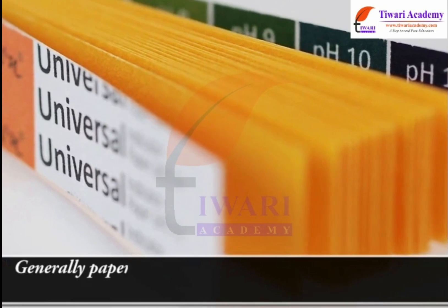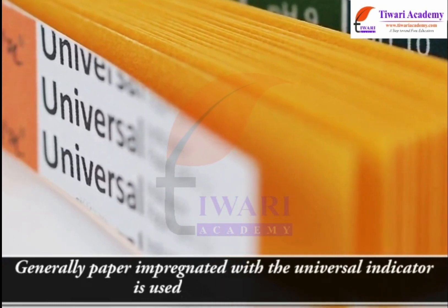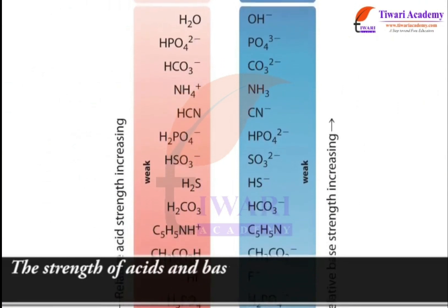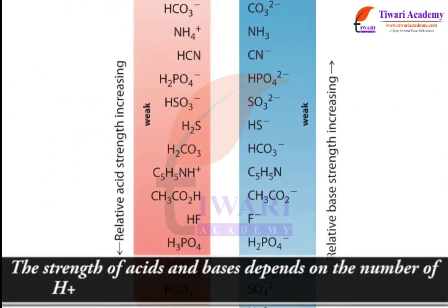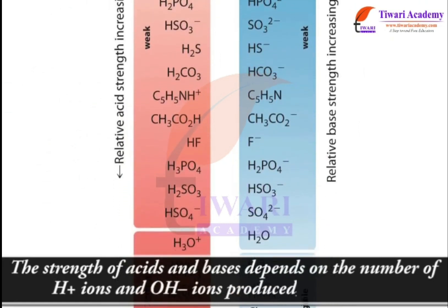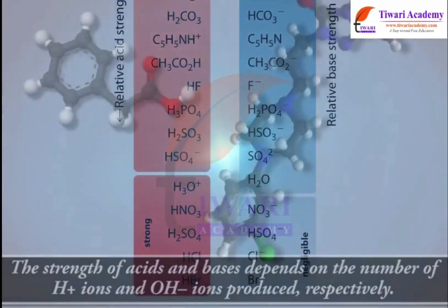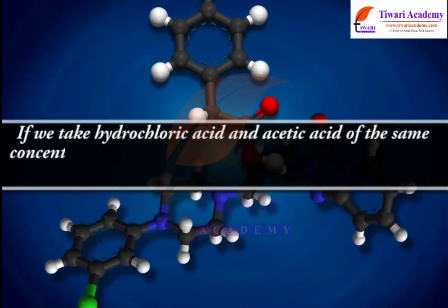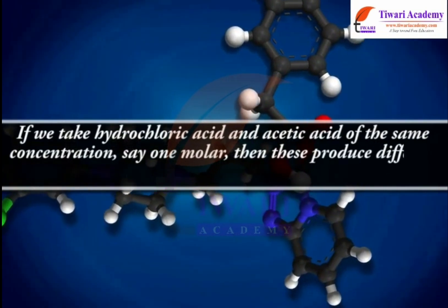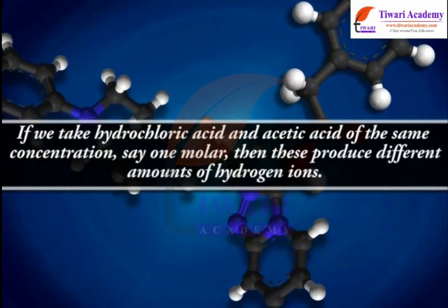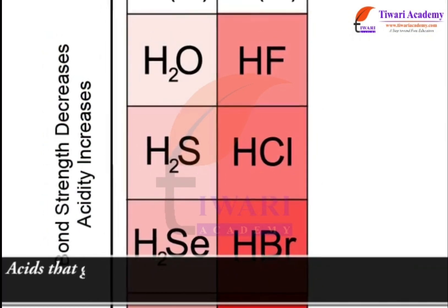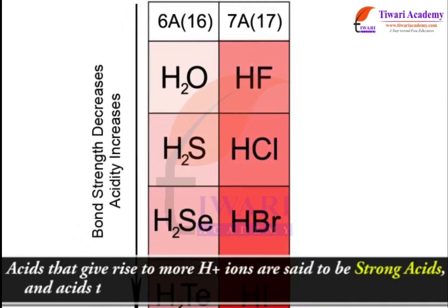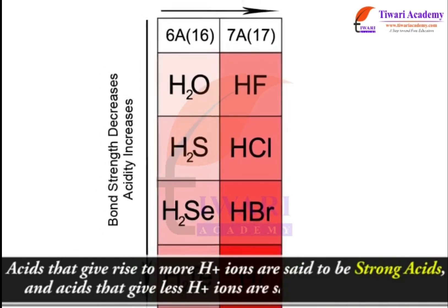Generally, paper impregnated with the universal indicator is used for measuring pH. The strength of acids and bases depends on the number of H⁺ ions and OH⁻ ions produced respectively. If we take hydrochloric acid and acetic acid of the same concentration, say 1 molar, then these produce different amounts of hydrogen ions. Acids that give rise to more H⁺ ions are said to be strong acids, and acids that give less H⁺ ions are said to be weak acids.